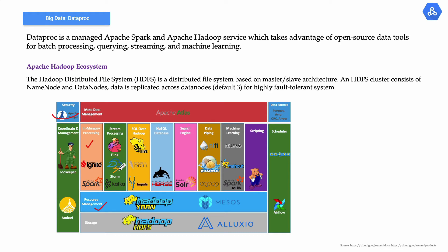For stream processing: Flink, Storm, Kafka. SQL over Hadoop: Apache Hive, Impala. NoSQL database: Apache HBase. Search engine: Solr. Data piping: NiFi, Flume, Sqoop. Machine learning: Madlib, Spark MLlib. Scripting: Pig.